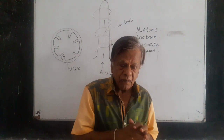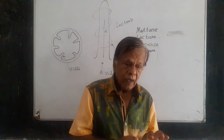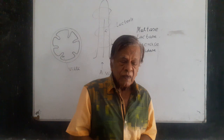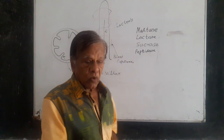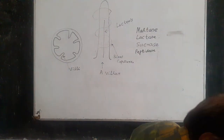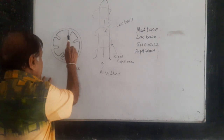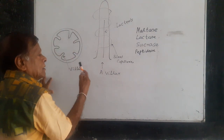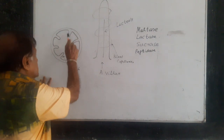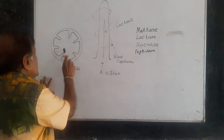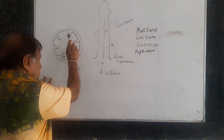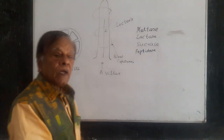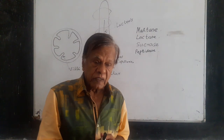The next process is absorption of these digestible products. In the small intestine, you have finger-like protrusions called villi. Villi are finger-like protrusions found inside the small intestine. Because of these villi, the absorption area is increased.